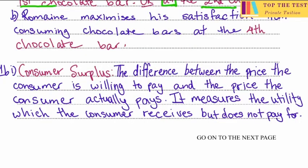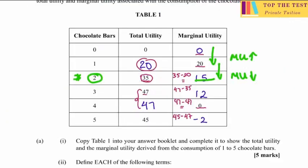For part b, Romaine maximizes his satisfaction at the fourth chocolate bar. Total utility is maximized when marginal utility equals 0 — this comes from understanding the shapes of the curves. Since MU equals 0 at a quantity of 4, consuming the fourth chocolate bar is where his total utility is being maximized.